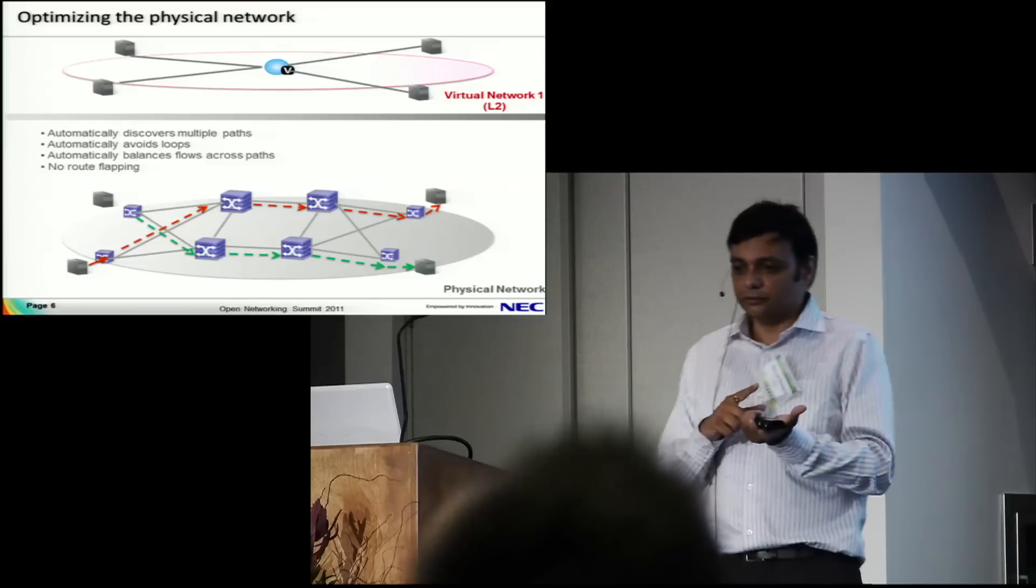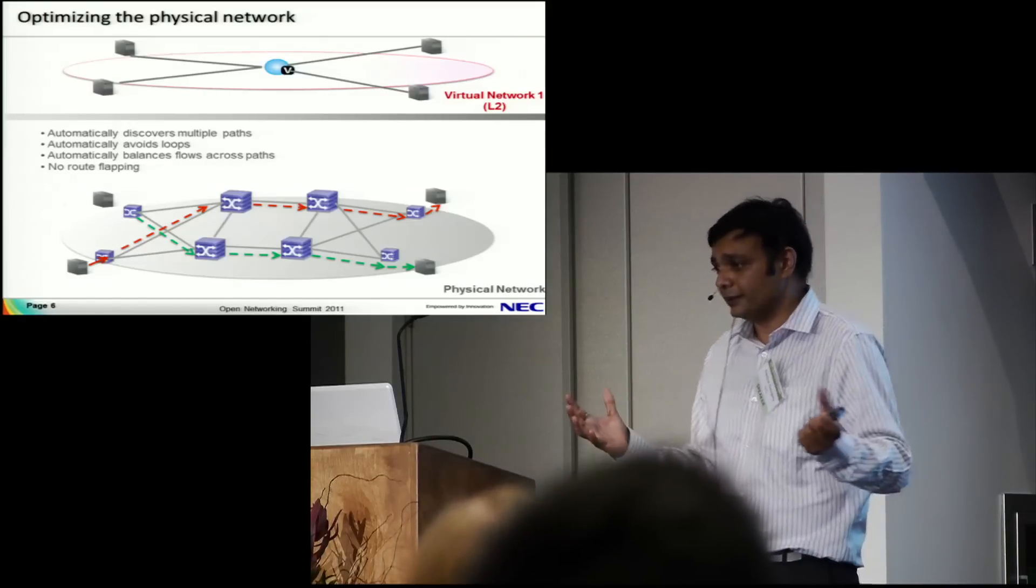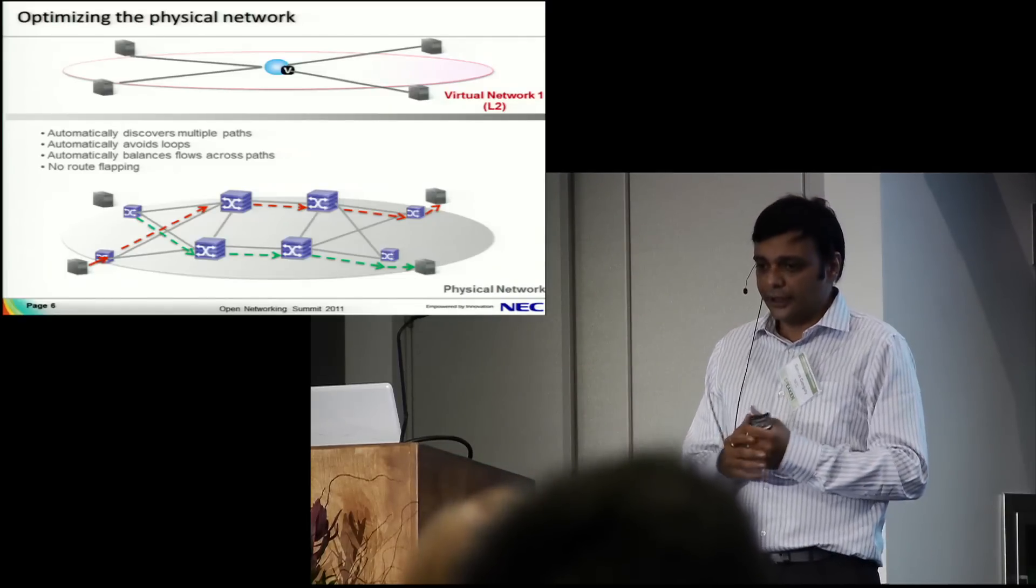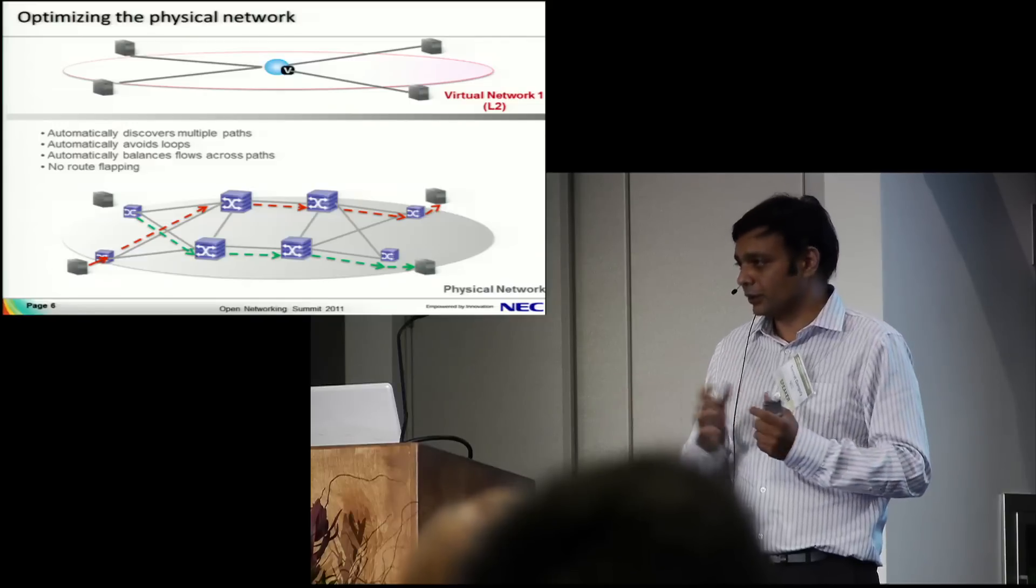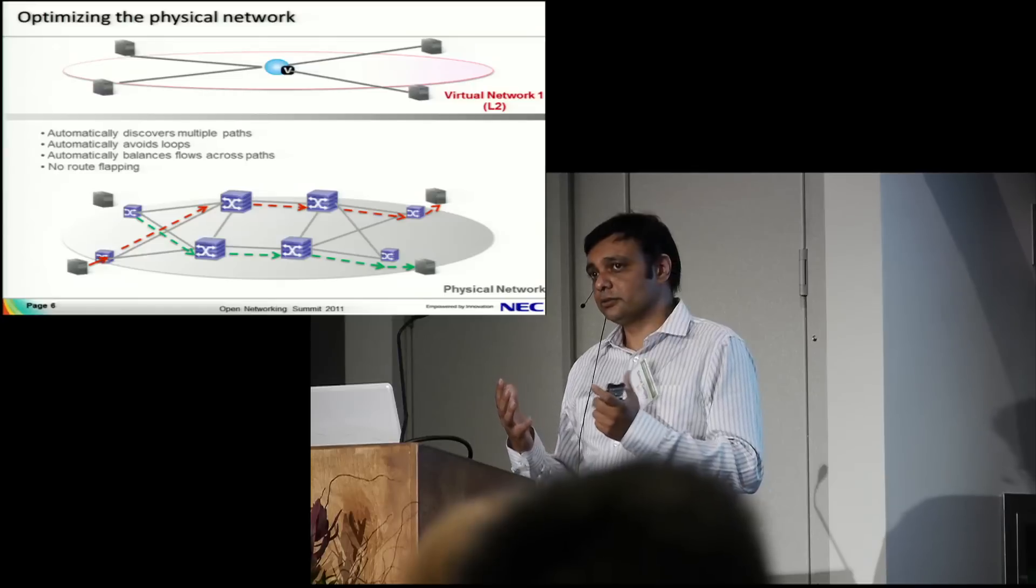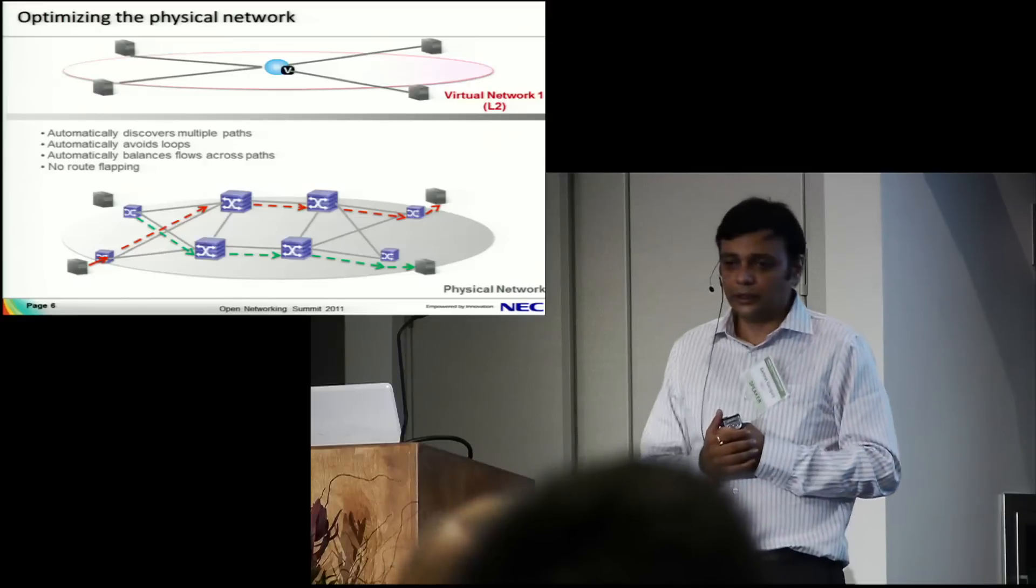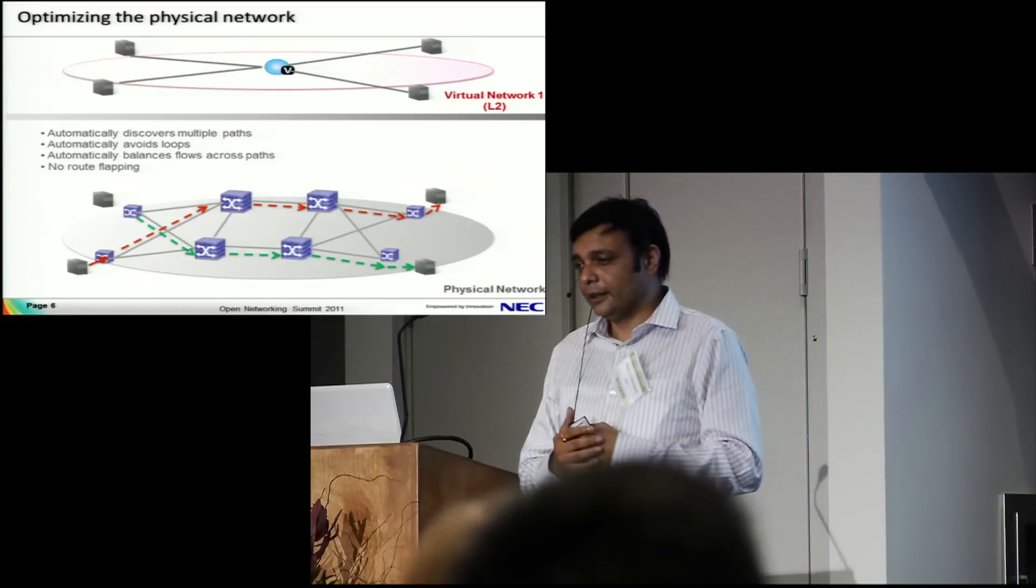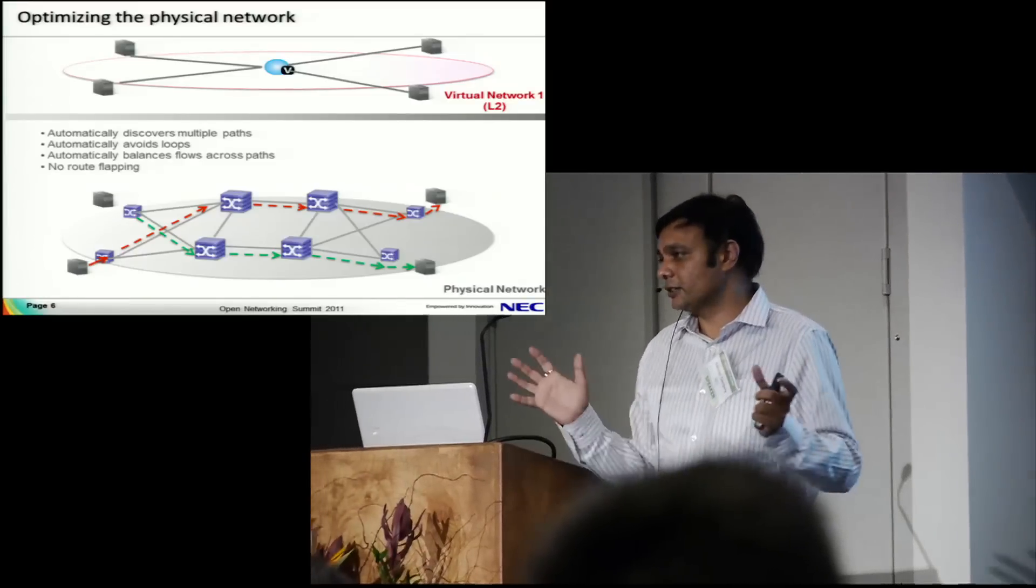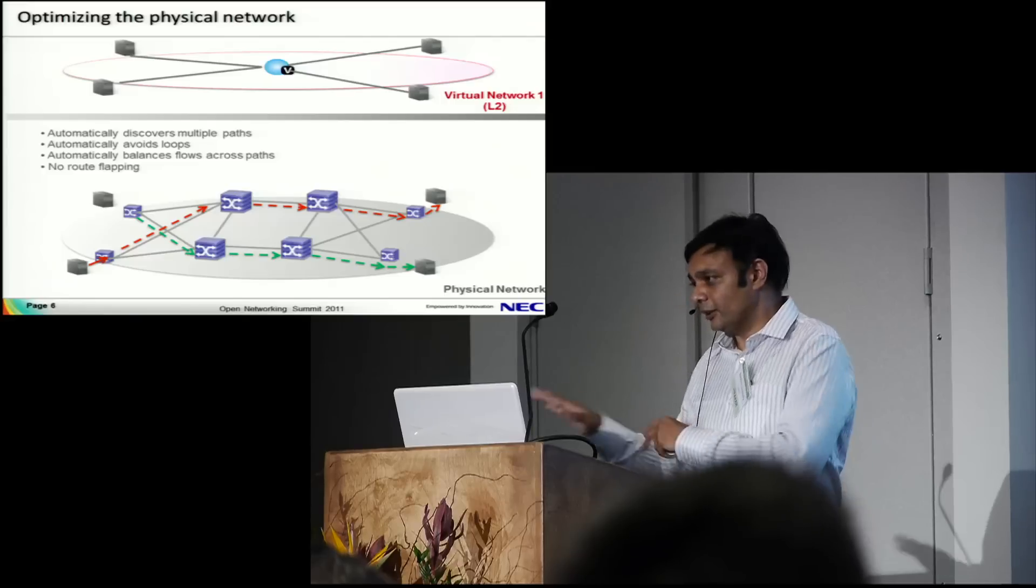You can balance flows into the network without any flapping because everything is centralized. These are advantages of running a centralized approach. If you remember what Nick said this morning - half of the things are very small route computations where the entire distributed protocol part is essentially avoided, as opposed to a normal legacy network.